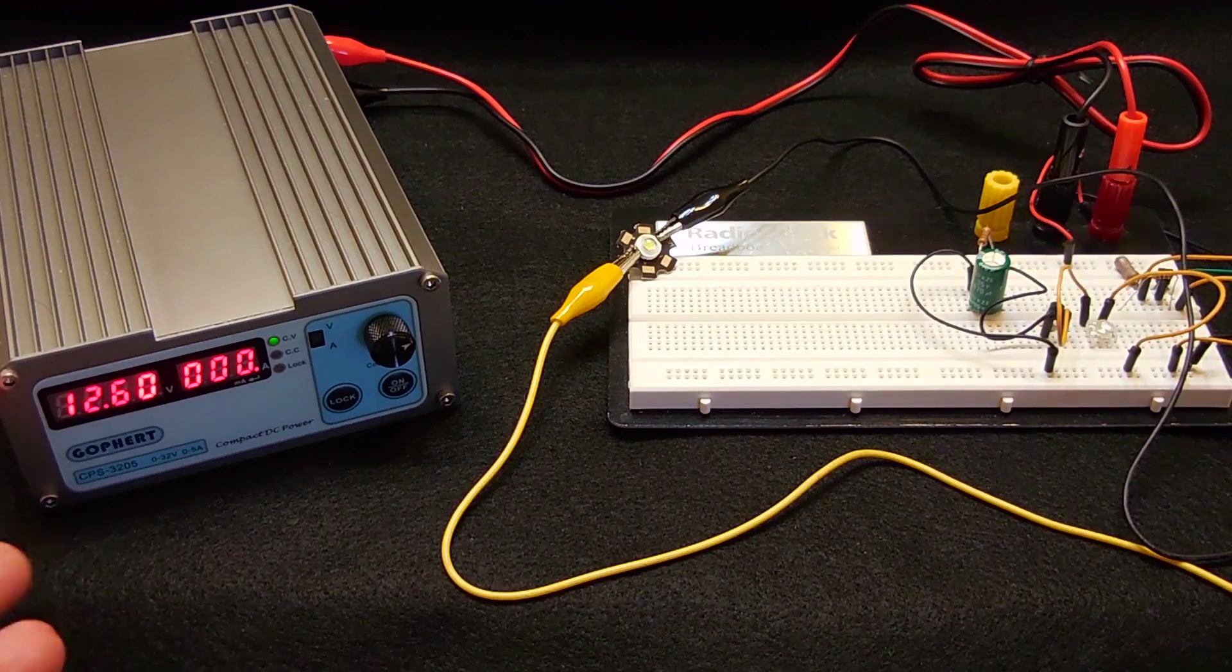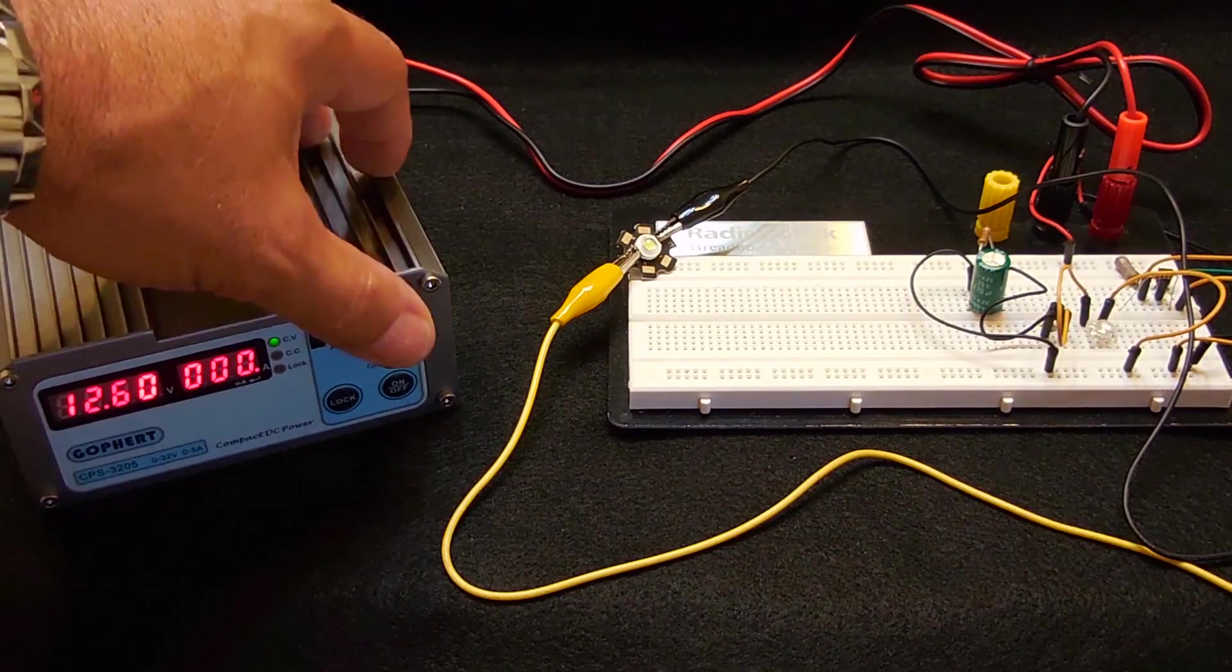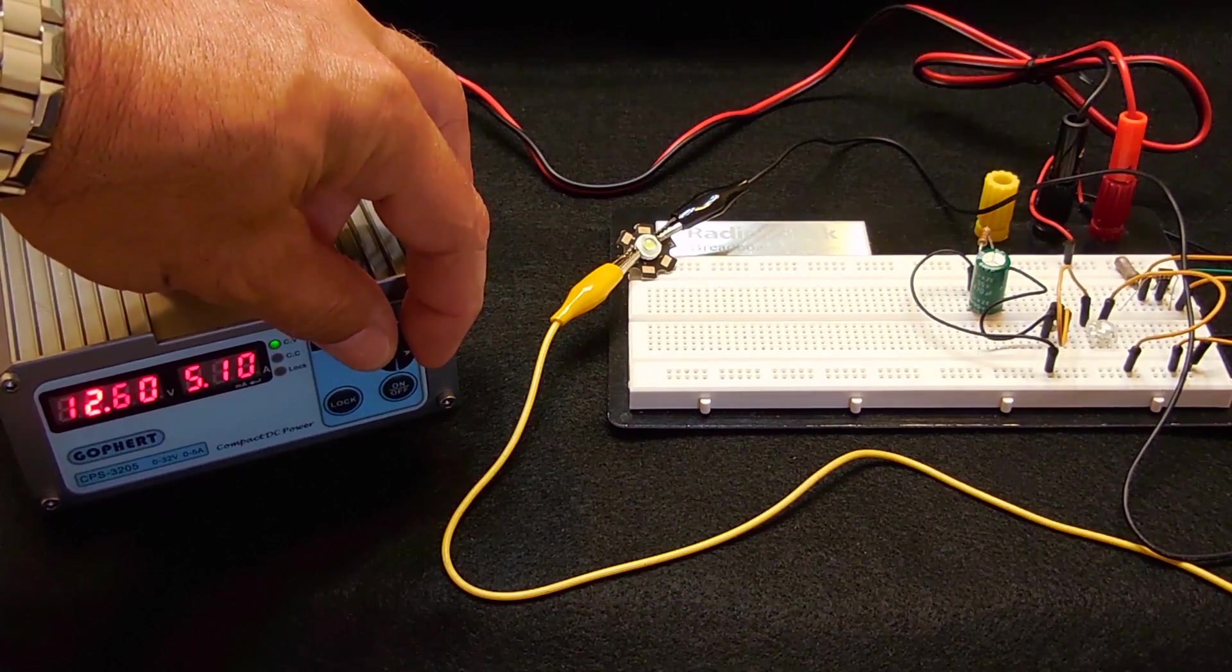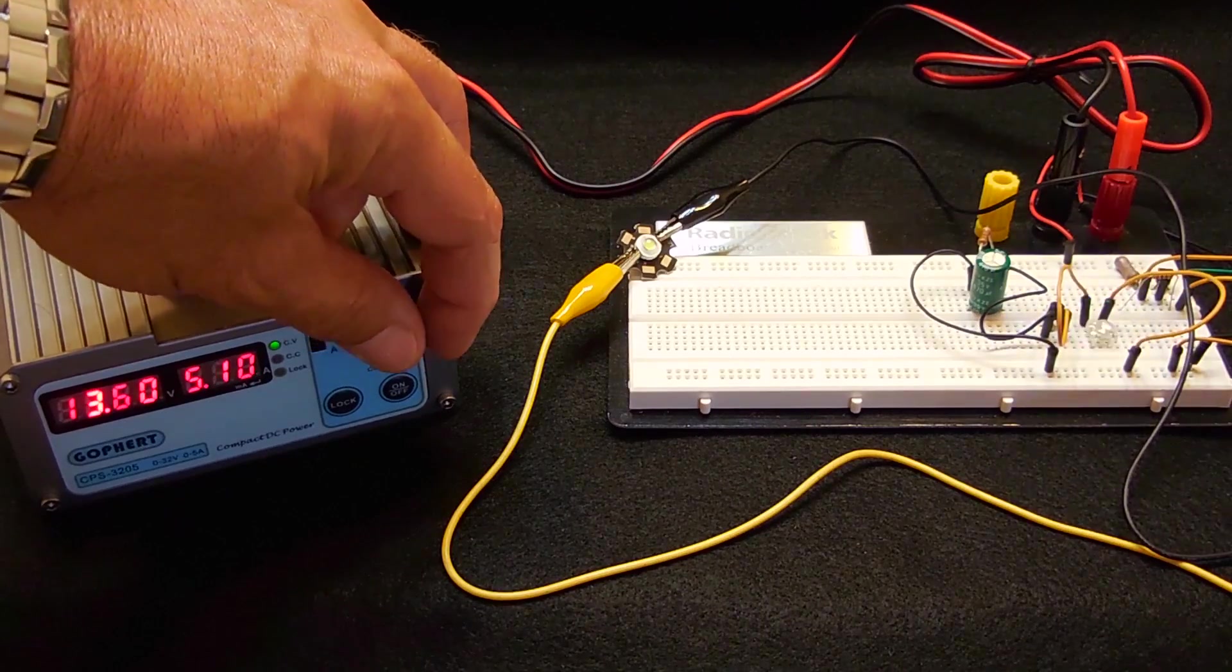So the way it's set up now, I've got about a 3V spread. So let me just show you. Let me lower it, let me go up one notch. See it's flashing faster at 13.6, 13.7, 13.8.